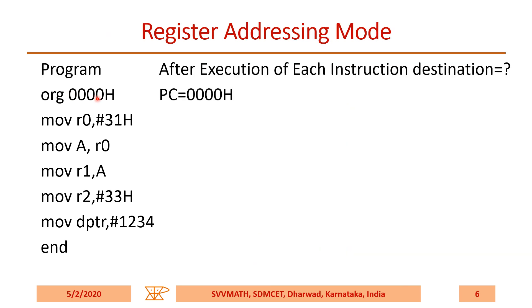When ORG 000H is executed, PC will become 000H. After the execution of each instruction, we are going to discuss the content of the destination. When MOV R0, #31H is executed, R0 becomes 31H. Sometimes I may use capital, sometimes lowercase — both are the same.